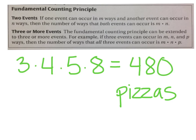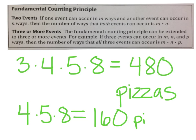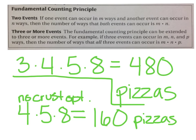And what if we said, take the crust out of the equation. We don't get a choice in the crust. Then you would just take out the three and just multiply the four times the five times the eight. If that crust wasn't an option, then we'd only have 160 different pizzas. But it's pretty simple. You just take the different combinations and you multiply them together.